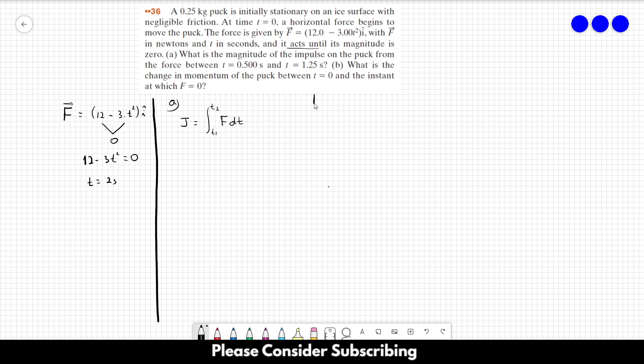We can calculate the impulse by integrating from t1 to t2, F dt. That's how we get the impulse. In letter a's case, the initial t is 0.5, the final one is 1.25, F is equal to 12 minus 3t squared, dt.